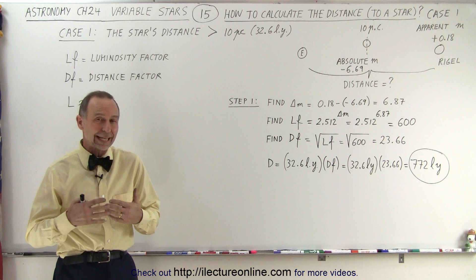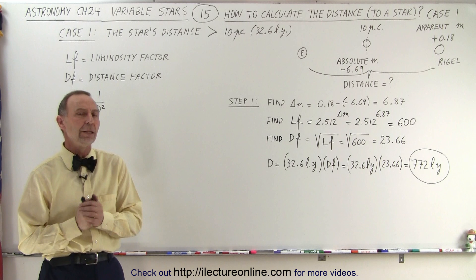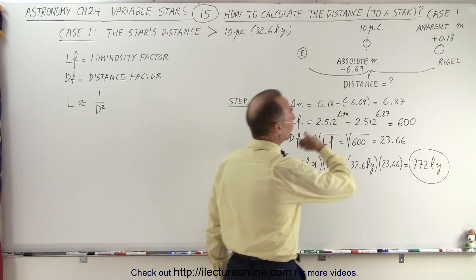Welcome to our Lecture Online. We've been talking about how we're able to calculate the distance to a star if we know both the absolute magnitude and the apparent magnitude. But now the question is, how do you do that? Well, here it is. This is how we do that. Now, we need to take two cases.